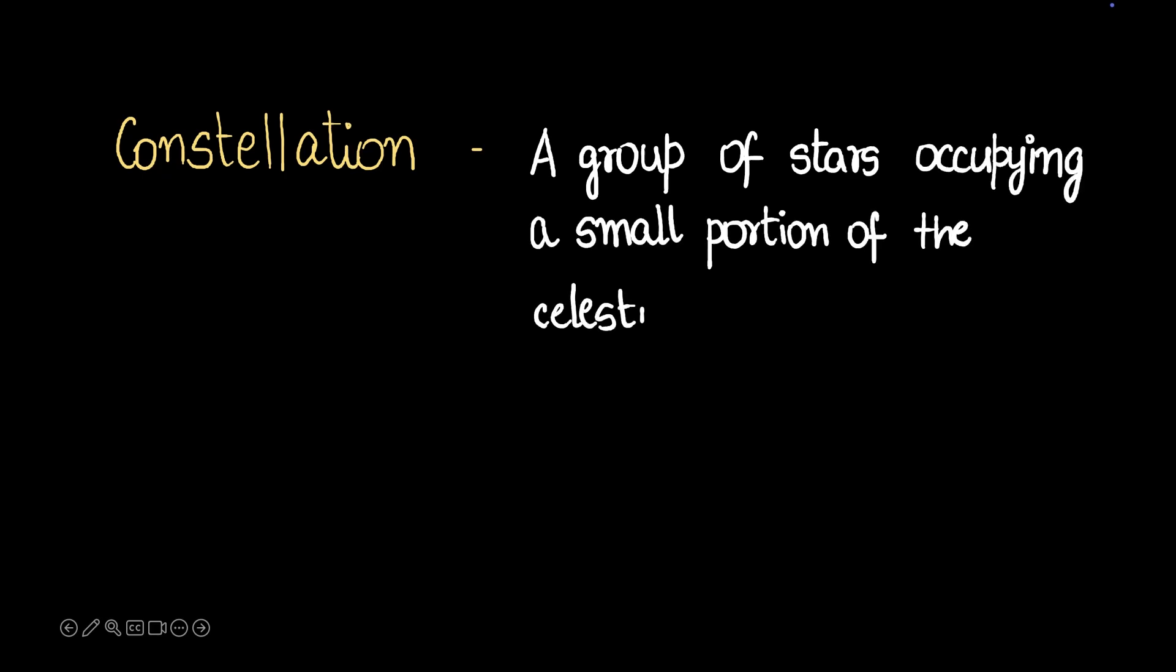In this video we'll talk about constellations. A constellation is a group of stars occupying a small portion of the celestial sphere and appearing to form some kind of pattern. In short, that's a group of stars forming a pattern in the sky. Have you ever looked up at the sky and wondered if these stars form some shape like a scorpion or a lion? This is basically that.